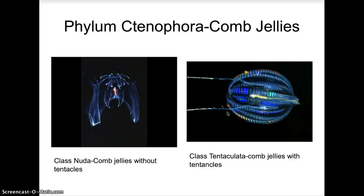What's really cool about ctenophores or comb jellies is that they can bioluminesce. There are two classes of comb jellies: class Nuda, which are comb jellies without tentacles, and class Tentaculata, which are comb jellies with tentacles. And that's all for our sponges and jellies.